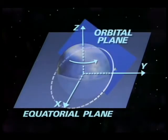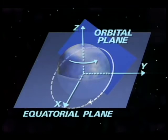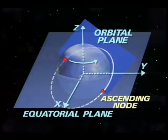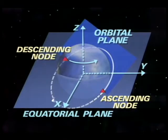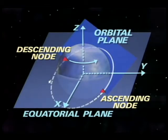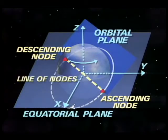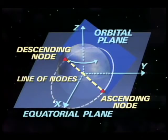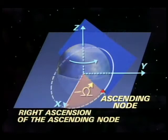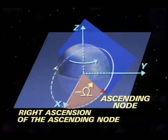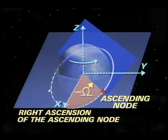Nodes are points in a satellite's orbit which intersect the Earth's equatorial plane. The ascending node is the point at which the spacecraft crosses the equator going from south to north. The descending node is where the spacecraft crosses the equator going from north to south. The line joining the two nodes is called the line of nodes. The right ascension of the ascending node is the angle between the x-axis and the ascending node, always measured eastward from the direction of the vernal equinox in the Earth's equatorial plane.